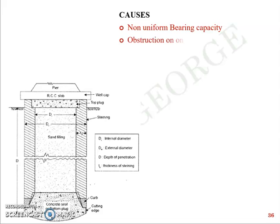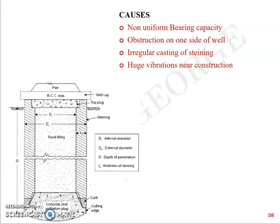The second cause is an obstruction on one side of the well while sinking, which may induce a tilt. Next, irregular casting of the steining — if the well steining is not cast properly — can also lead to tilt or shift. Additionally, huge vibrations near the construction site can lead to problems in well sinking.